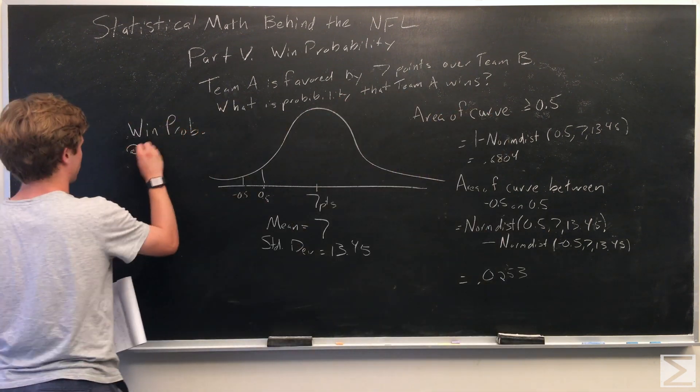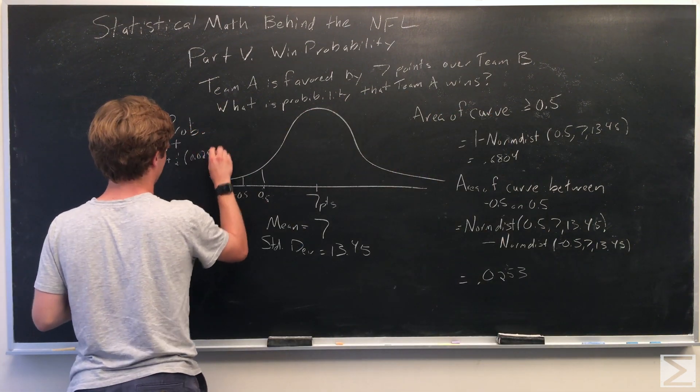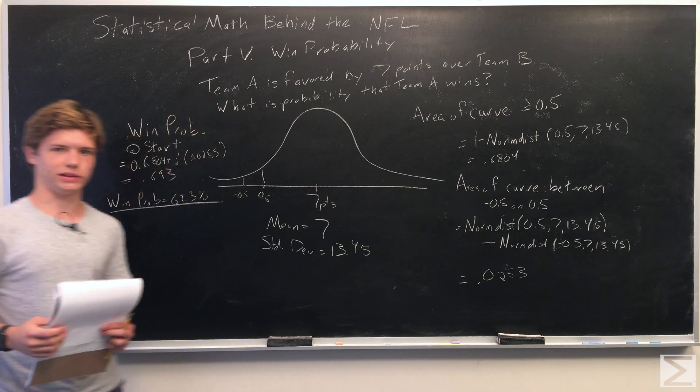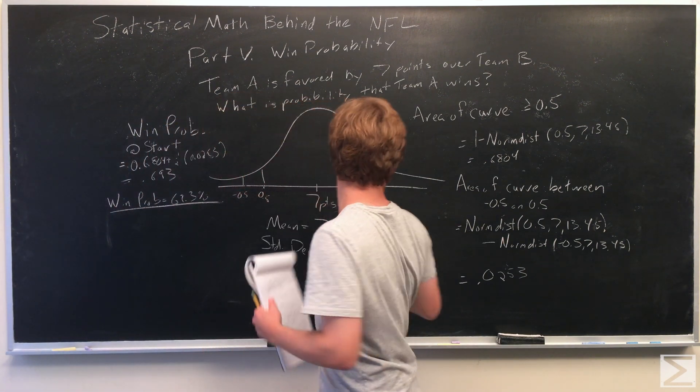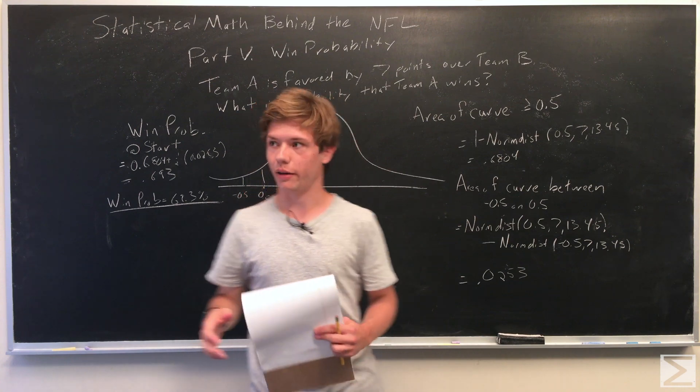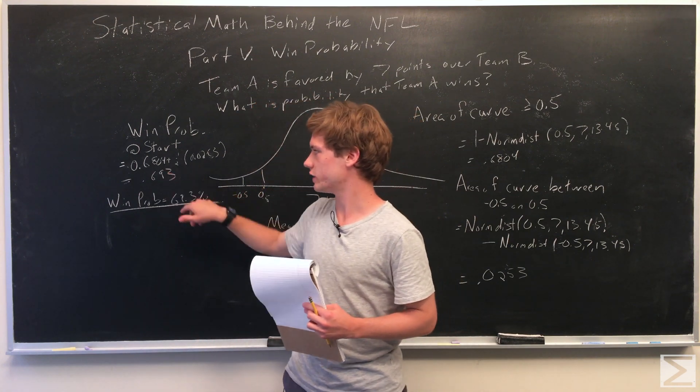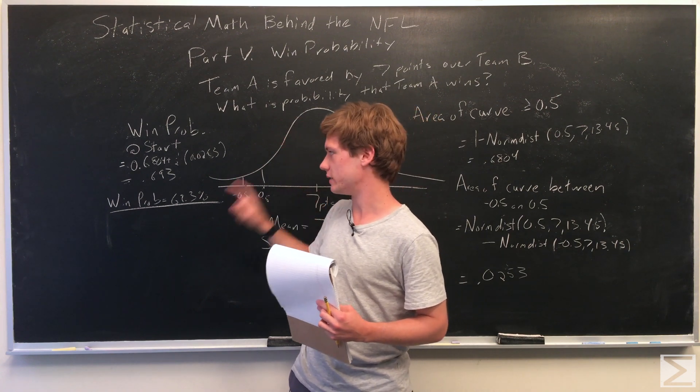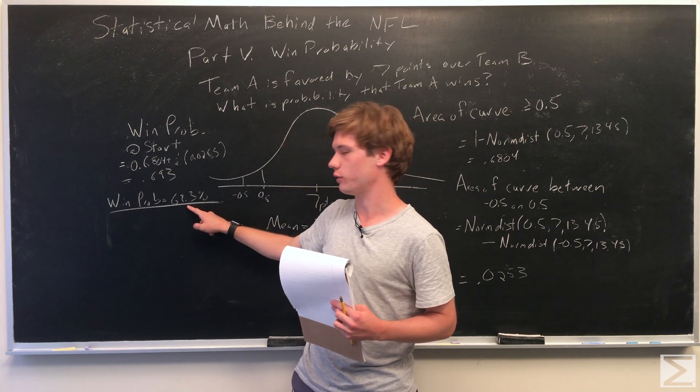Okay. So we can see that we took these two numbers, we added them together and found that at the beginning of the game, given this information, Team A has a 69.3% chance of winning based on only this information.